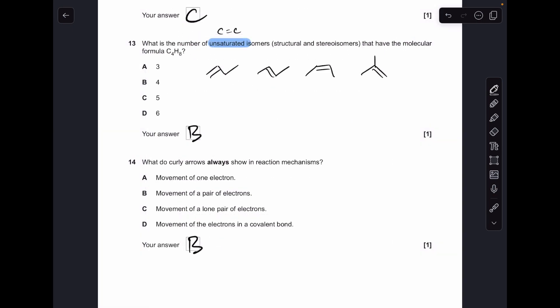Number fourteen, just a definitions test: a curly arrow represents the movement of an electron pair, so B is the answer.